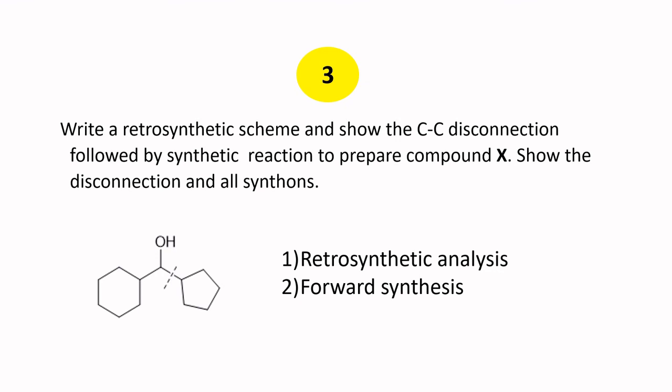In example three, the typical instruction asks you to write a retrosynthetic scheme showing the C-C disconnection followed by synthetic reactions to prepare the target compound. As in the first example, you need two items: the retrosynthetic analysis and the forward synthesis. In this case we disconnect the molecule at a specific C-C bond.